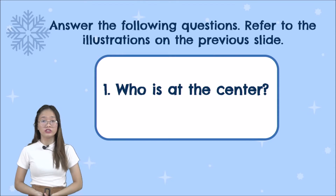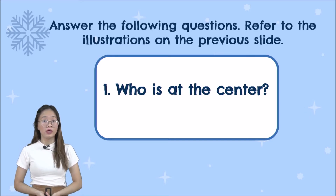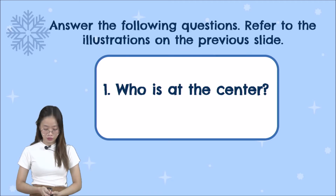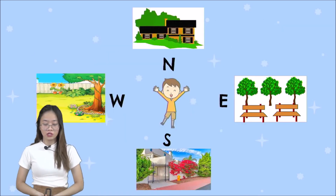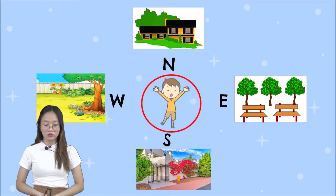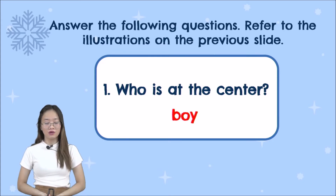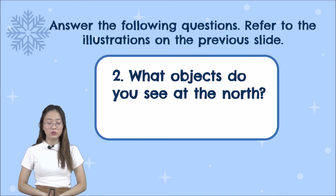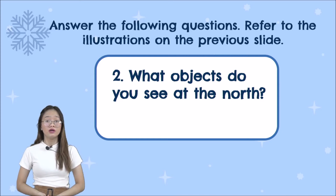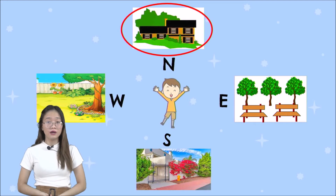Using that simple illustration, we need to answer the following questions. The first question is: who is at the center? The one who is in the center is the boy. For number two, what objects do you see at the north? As you can see, we have the classrooms on the north direction. So the answer is classrooms.